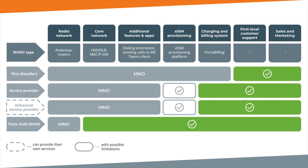The last MVNO type is Full or Thick MVNO. They have the highest degree of operational independence. Even though they still do not own any radio network elements, they might own and operate significant parts of the core network infrastructure, such as the Home Location Register, also known as HLR, that stores information about SIM cards such as the main SIM card identification key, IMSI. Full MVNOs may also own an MSC — Mobile Switching Center — that handles call routing and termination. The main advantage of Full MVNOs is that they can sign agreements with several MNOs and thus offer their customers good mobile coverage all over the country at advantageous prices.